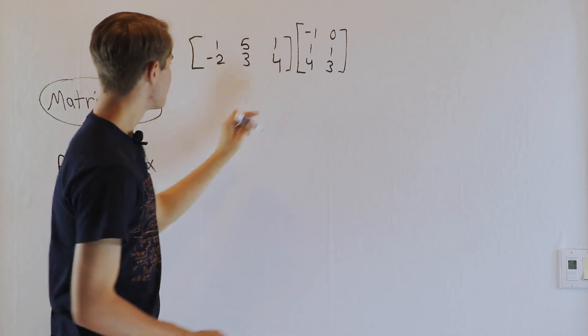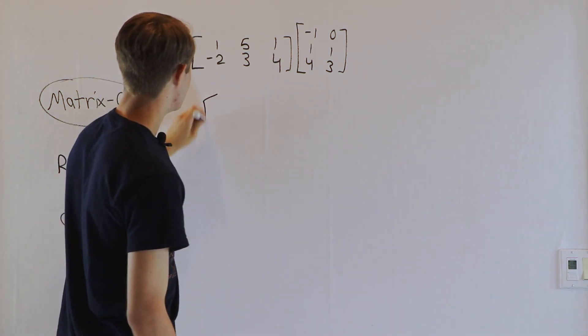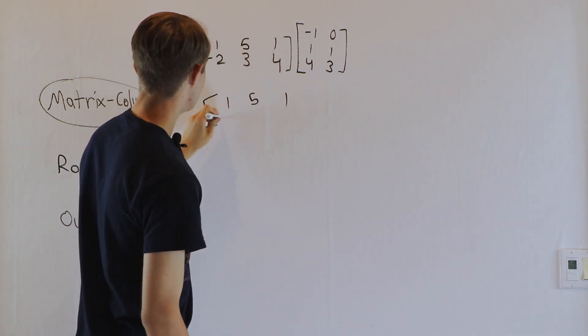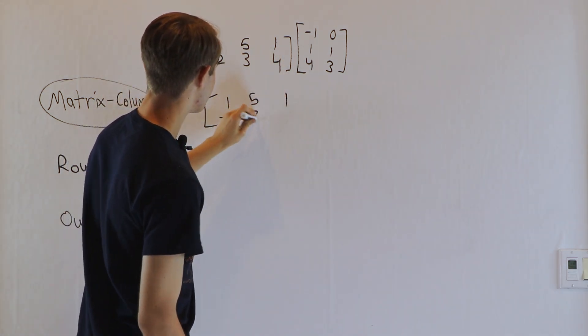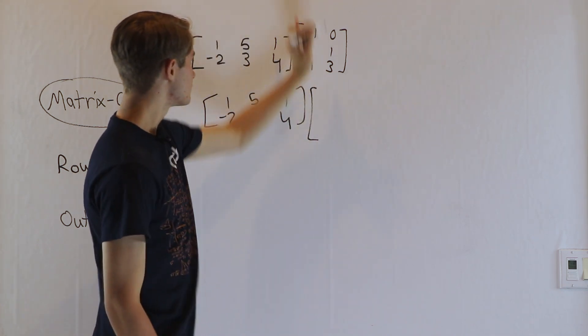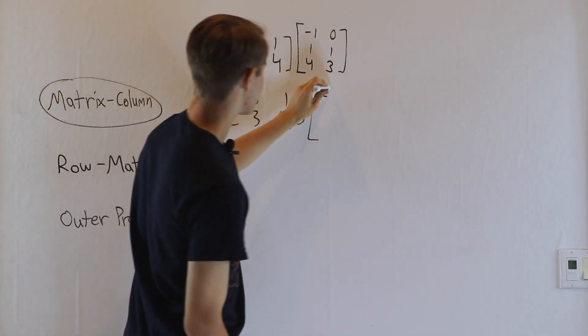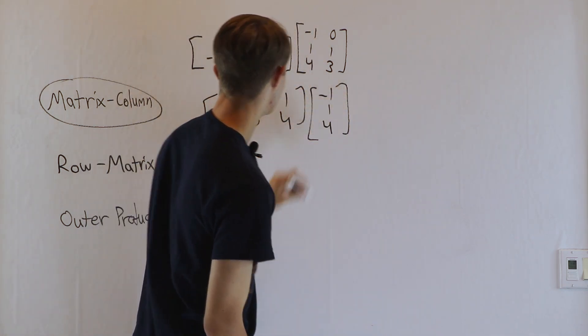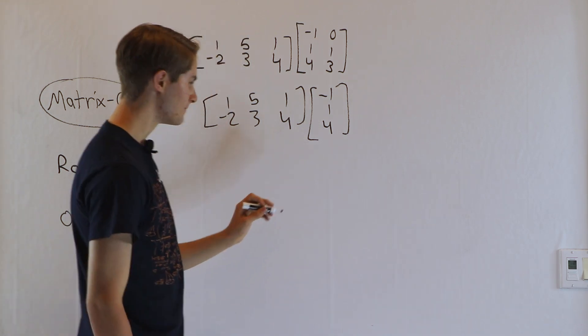So let's say we want to multiply these two matrices. The first thing we're going to do is take the first matrix and then multiply it by the first column vector, negative 1, 1, 4, just like this.